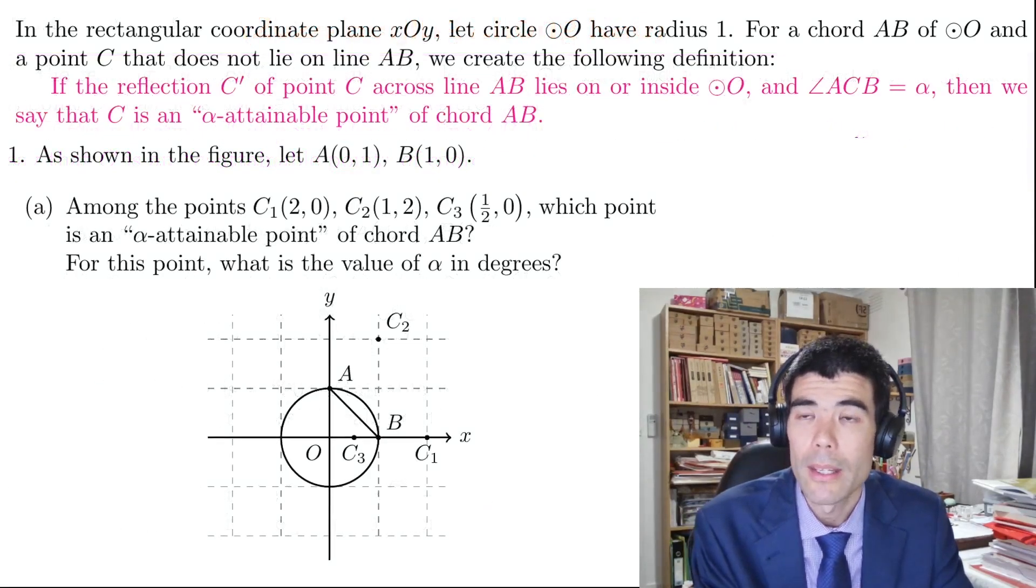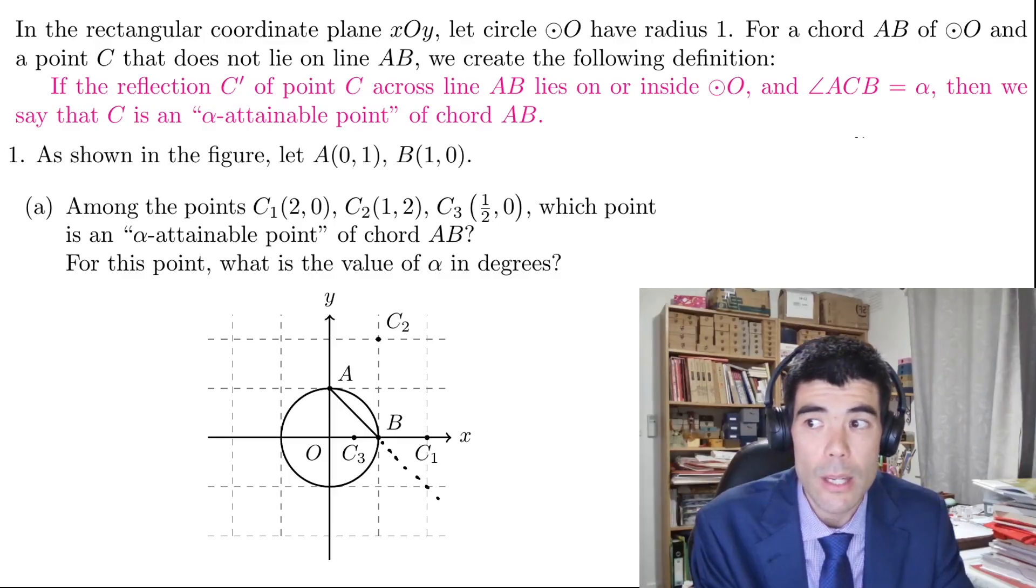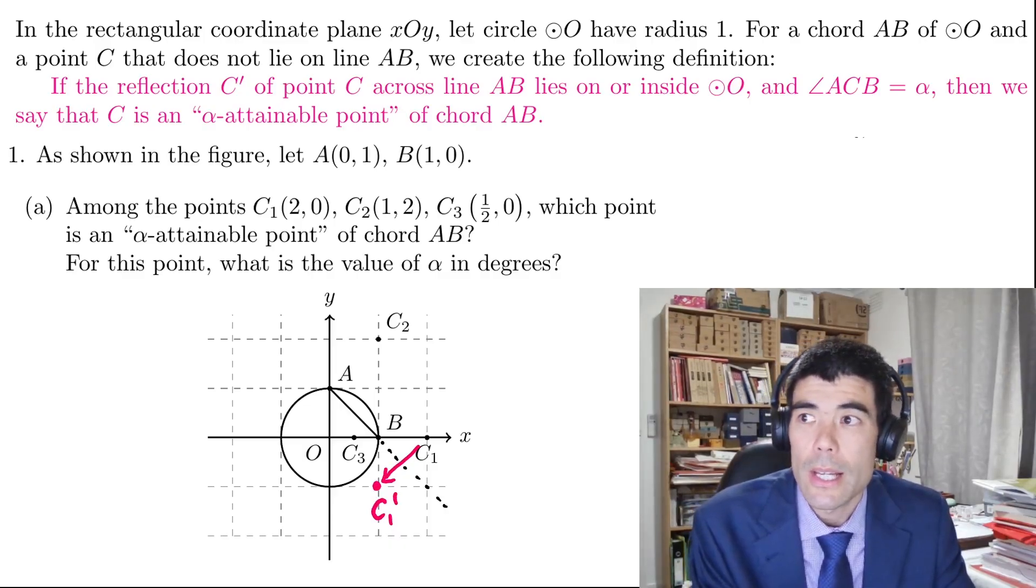So for part 1 and part 1a we're given these three points and want to know which one of them is an alpha attainable point. For example, if we reflect C1 across the line AB, we'll get to this point here which is not in the circle, so that's no good.